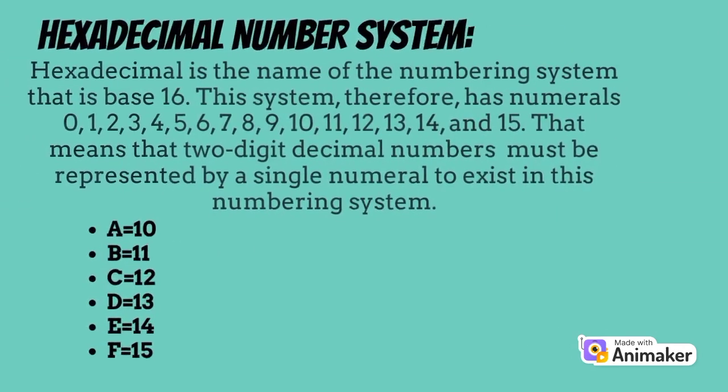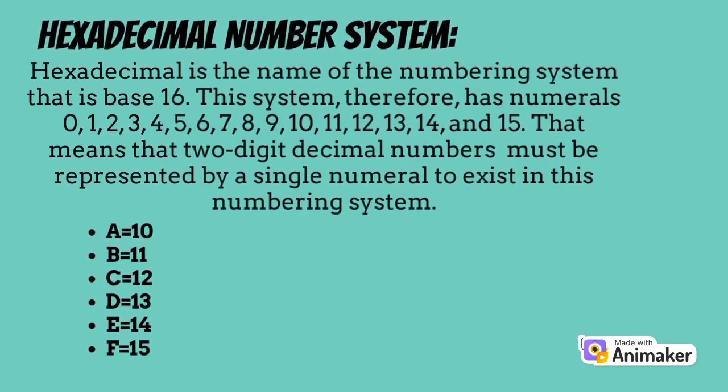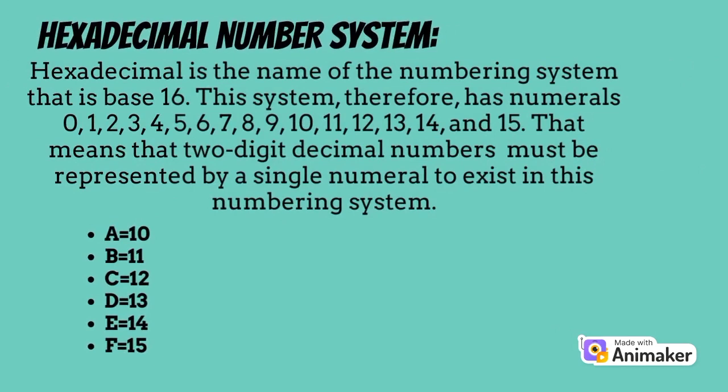Hexadecimal number system. Hexadecimal is the name of the numbering system that is base 16. This system therefore has numerals 0 through 15, meaning two-digit decimal numbers must be represented by a single numeral. A equals 10, B equals 11, C equals 12, D equals 13, E equals 14, F equals 15.